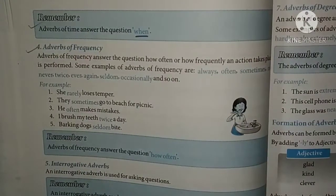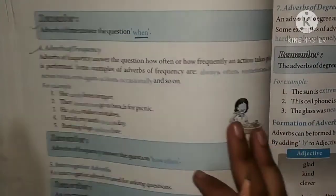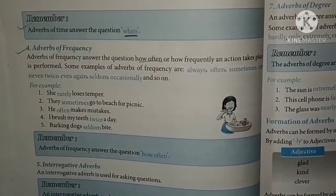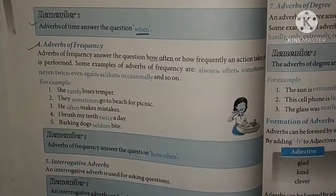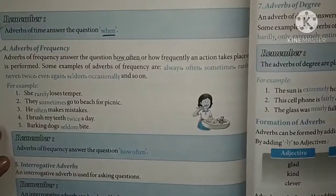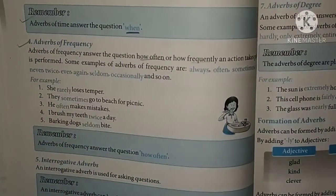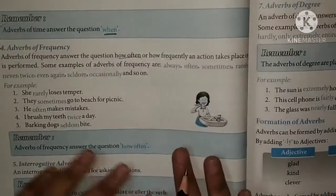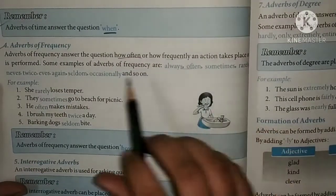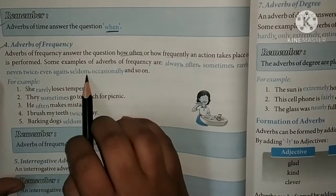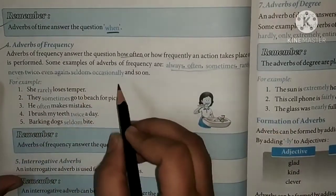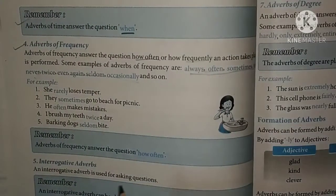Fourth kind: Adverbs of Frequency. Adverbs of frequency answer the question 'how often' — they show how frequently an action takes place, whether it happens rarely, often, or many times. Some examples: always, often, sometimes, rarely, never, twice, ever, again, seldom, occasionally, and so on.